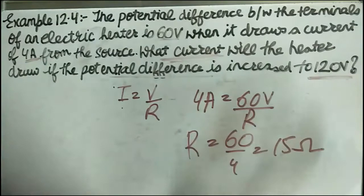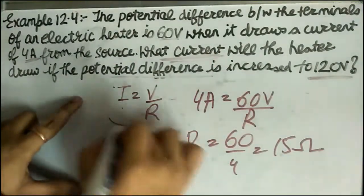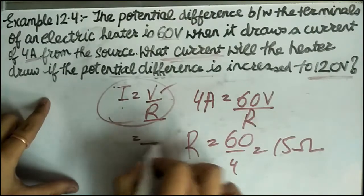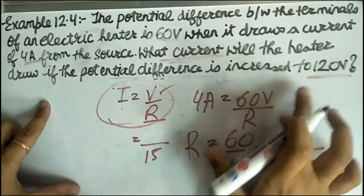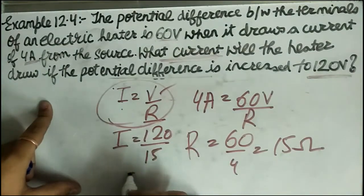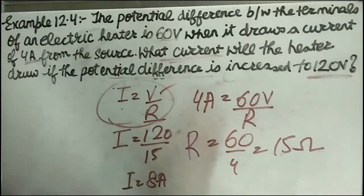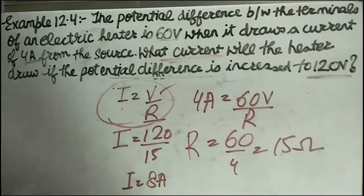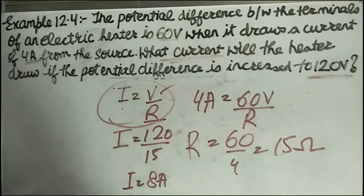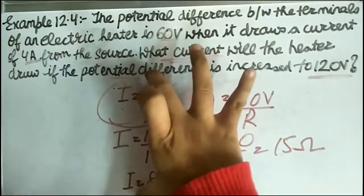Now for the second case, resistance is still 15 ohm and voltage is 120 volt. Using I = V / R, I = 120 / 15 = 8 ampere. The key concept is that resistance is always constant, so we extracted it from the first case and applied it to the second case.